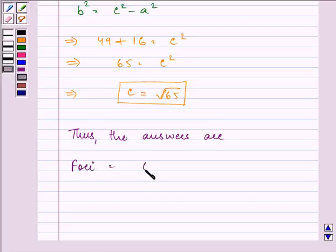Now, the answers are: foci is (0, ±c), and that is (0, ±√65). Then the vertices is (0, ±a), that is (0, ±4).